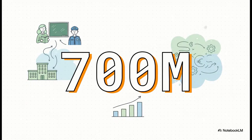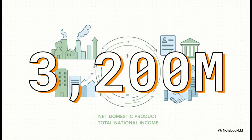Now for the government's part. This is a little different — the government doesn't really sell things. So how do we measure its value added? We do it by looking at what it pays its employees: people like teachers, firefighters, city planners. For our economy, let's say that number is $700 million. So you do the simple math: $2,500 from businesses plus $700 from the government gives us a Net Domestic Product of $3,200 million.